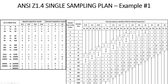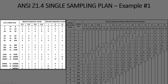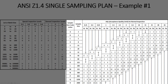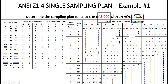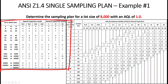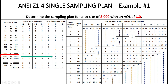Let's talk about the ANSI Z1.4 standard using an example. There are two tables: the first is the sample size code letter table, and the second helps you translate your sample size code and AQL into a sampling plan. For a lot size of 8,000 pieces with an AQL of 1.0, you find the 8,000-piece range in the sample size code letter table. Under the default general inspection level two, the sample size code letter is L.